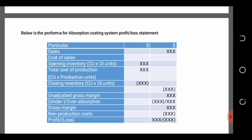Under absorption means we included less than what we should have included. Since we have already computed the gross margin without adjusting cost of sales, if there was an under absorption, we would have had to add the unabsorbed overhead to cost of sales but did not — so we overcasted the unadjusted gross margin and must now subtract it. Under absorption: subtract; overabsorption: add. This gives the real gross margin or gross profit.